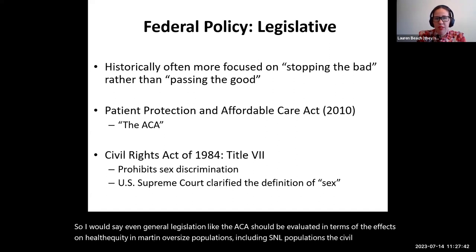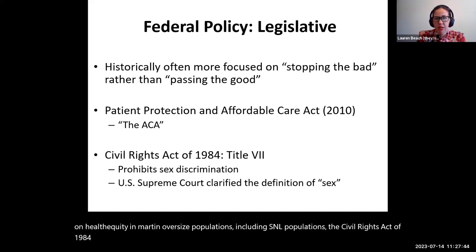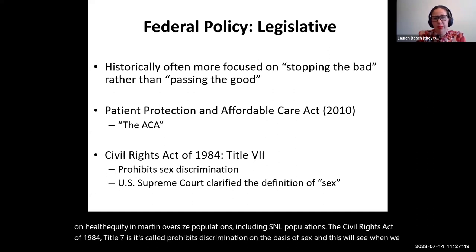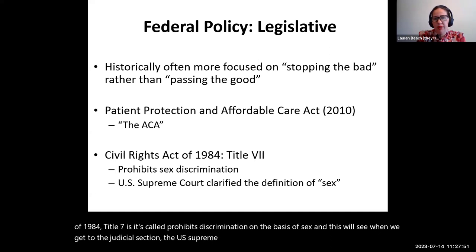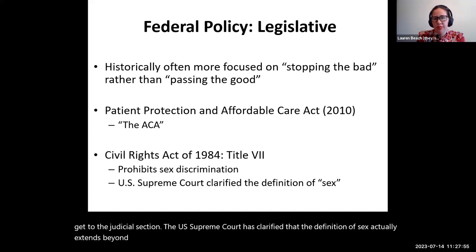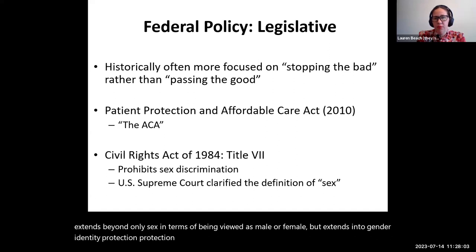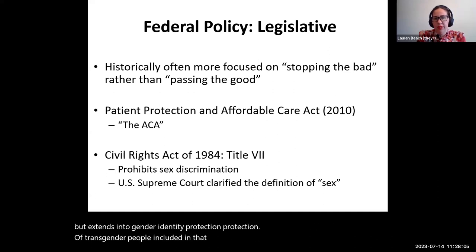The Civil Rights Act of 1964, Title VII, prohibits discrimination on the basis of sex. As we'll see in the judicial section, the US Supreme Court has clarified that the definition of sex actually extends beyond only being male or female — it extends into gender identity protections, including protection of transgender people, as well as protections from discrimination on the basis of sexual orientation.